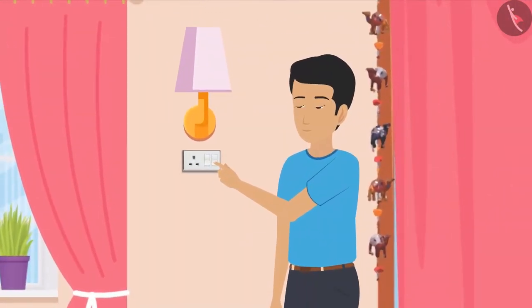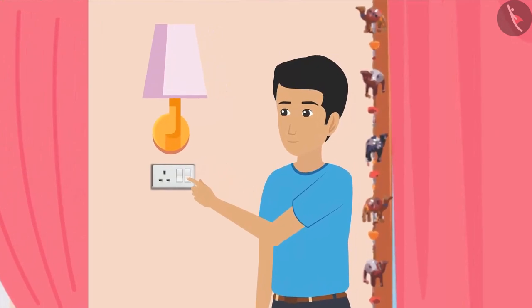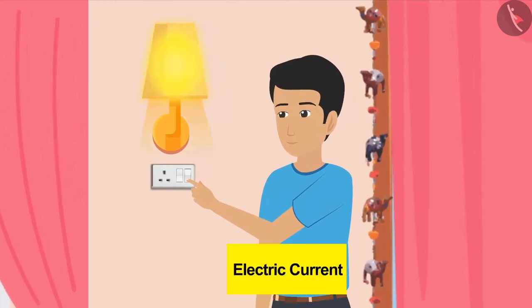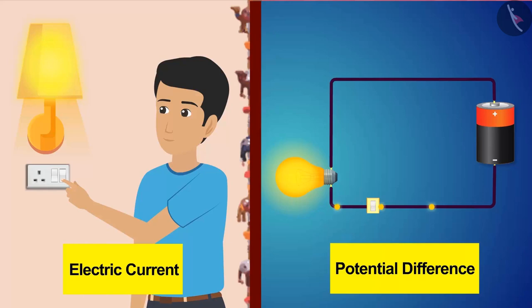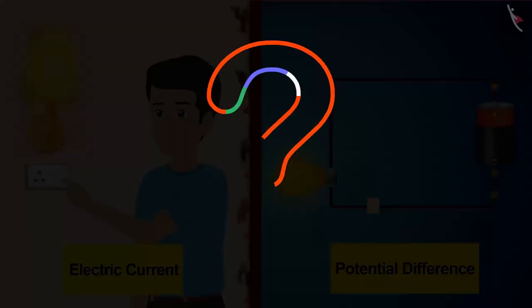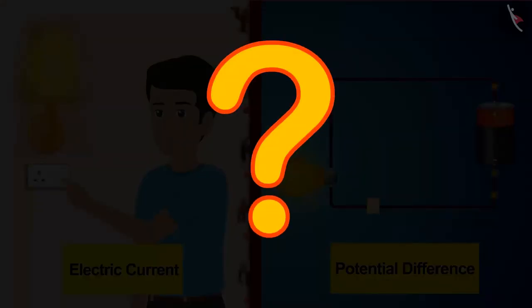As we have dealt with the two very important quantities related to electricity, electric current and potential difference, these two quantities form the foundation of electricity in physics. Now the question is, do these two functions work separately or is there a relationship between them?